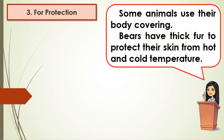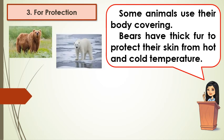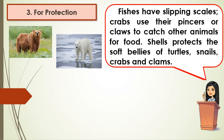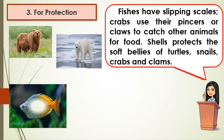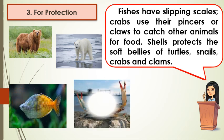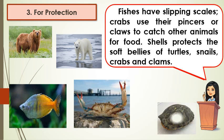Some animals use their body covering for protection. Bears have thick fur to protect their skin from hot and cold temperatures. Fishes have shiny scales. Crabs use their pincers or claws to catch other animals for food. Shells protect the soft bellies of turtles, snails, crabs, and clams.